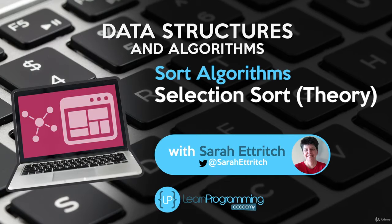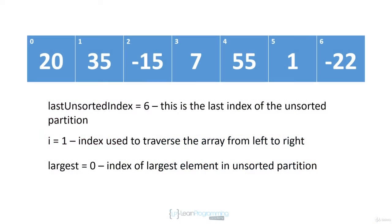In this video we're going to take a look at the selection sort algorithm. This algorithm divides the array into sorted and unsorted partitions, just like bubble sort does. We traverse the array and look for the largest element in the unsorted partition, and when we find it we swap it with the last element in the unsorted partition. At that point, the swapped element will be in its correct sorted position. Just like with bubble sort, at the beginning the entire array is unsorted, so the last unsorted index is six, and we're going to grow the sorted partition from right to left.